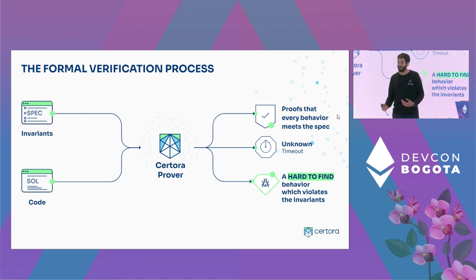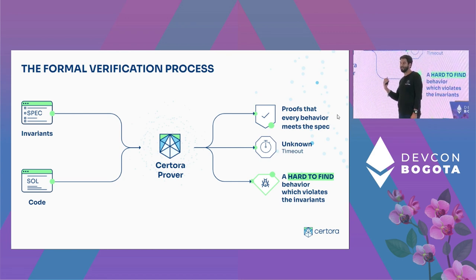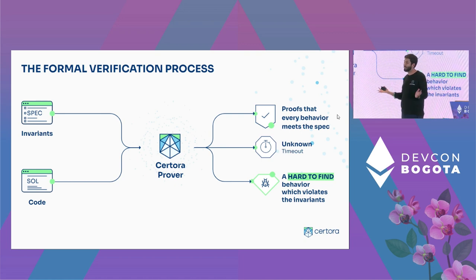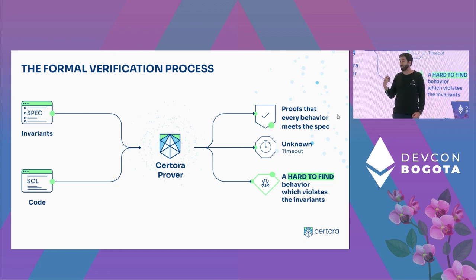Formal verification is the process where we take a piece of software and try to see if it behaves according to some pre-defined set of rules. We call those security properties or rules specifications. They are one of the two inputs — along with the code that we want to check — that we need to feed into the software that executes the formal verification, in this case the Sertora prover.